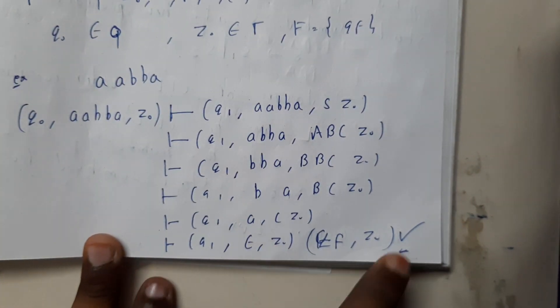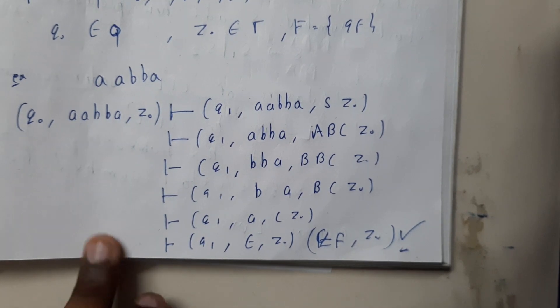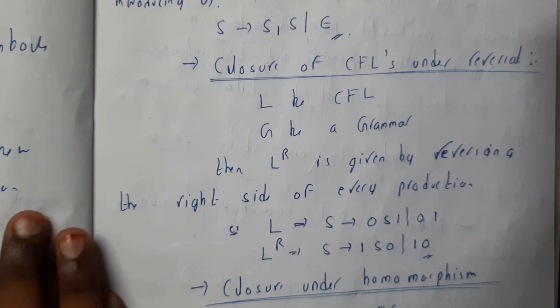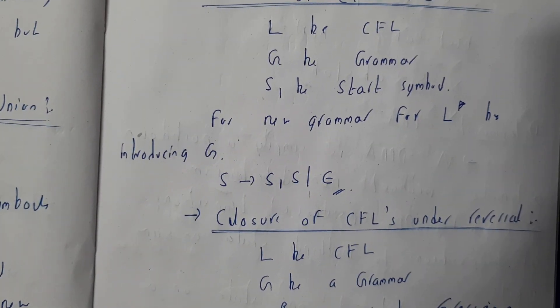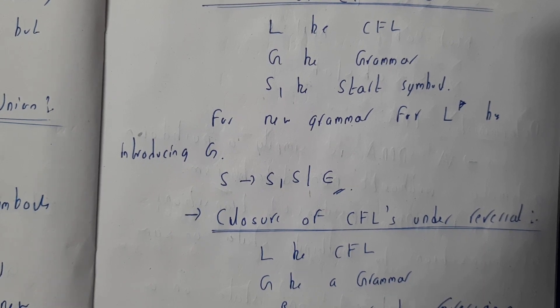According to these above transitions, we will be getting a final state. So in this way you can convert the context-free grammar into PDA. In the next tutorial, we will be going through some closure properties. Let us see you guys in the next tutorial. Thank you, thanks for watching.